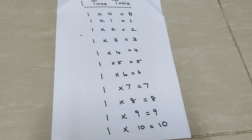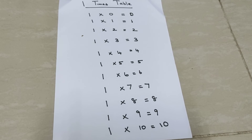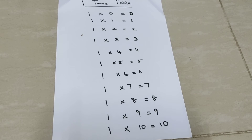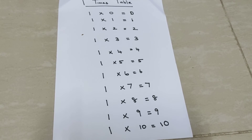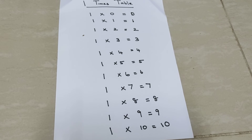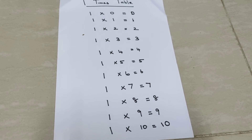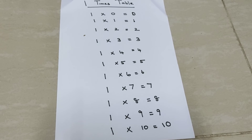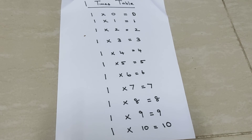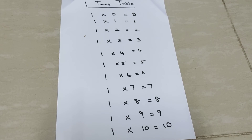1 ones are 1, 1 twos are 2, 1 threes are 3, 1 fours are 4, 1 fives are 5, 1 sixes are 6, 1 sevens are 7, 1 eights are 8, 1 nines are 9, 1 tens are 10.